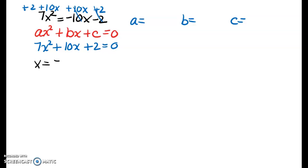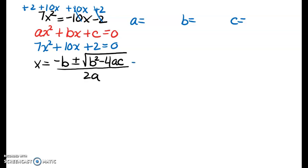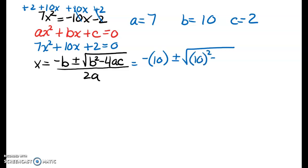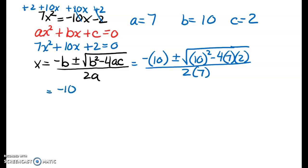So x equals negative B plus or minus the square root of B squared minus 4AC all over 2A. Remember to substitute using parentheses — and we need our A, B, and C values: A is 7, B is 10, and C is 2. I get 10 squared minus 4 times 7 times 2, all over 2 times 7. Simplifying: negative 10 plus or minus — 10 squared is 100, and 4 times 2 is 8 times 7 is 56. So we're subtracting 56, and 2 times 7 is 14.